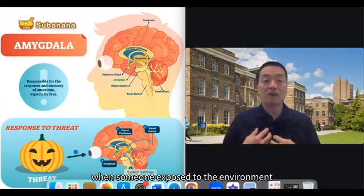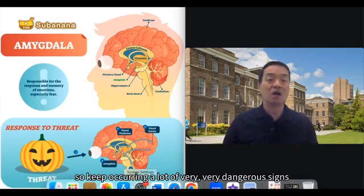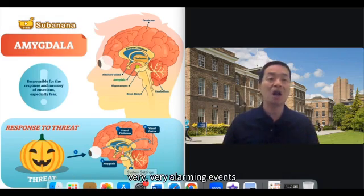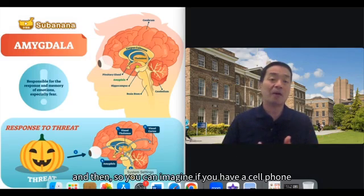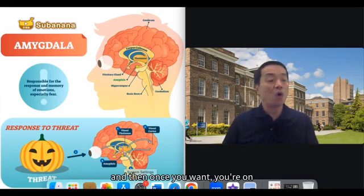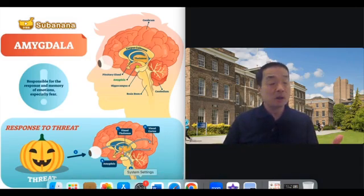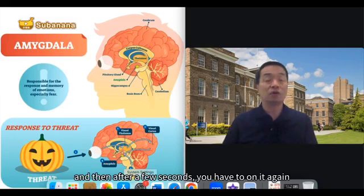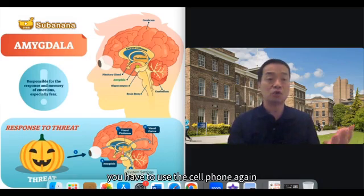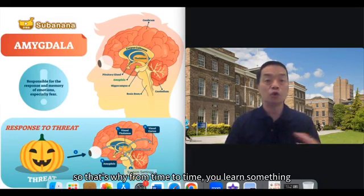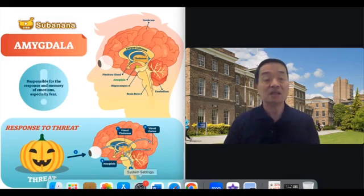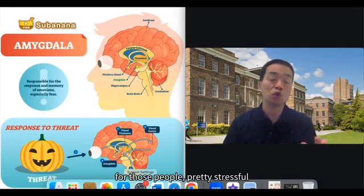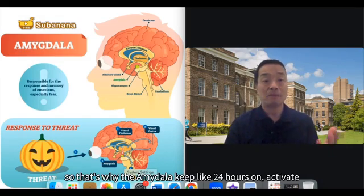You can imagine: when someone is exposed to a constantly stressful environment with a lot of very dangerous and alarming events, the amygdala keeps activating. It's like a cell phone — you switch it on to use it, then off, then on again. But if you keep needing to use it from time to time, you learn to just keep the cell phone on continuously. That's exactly like the reaction of the amygdala for those people under prolonged stress — the amygdala stays on, activated, 24 hours a day.